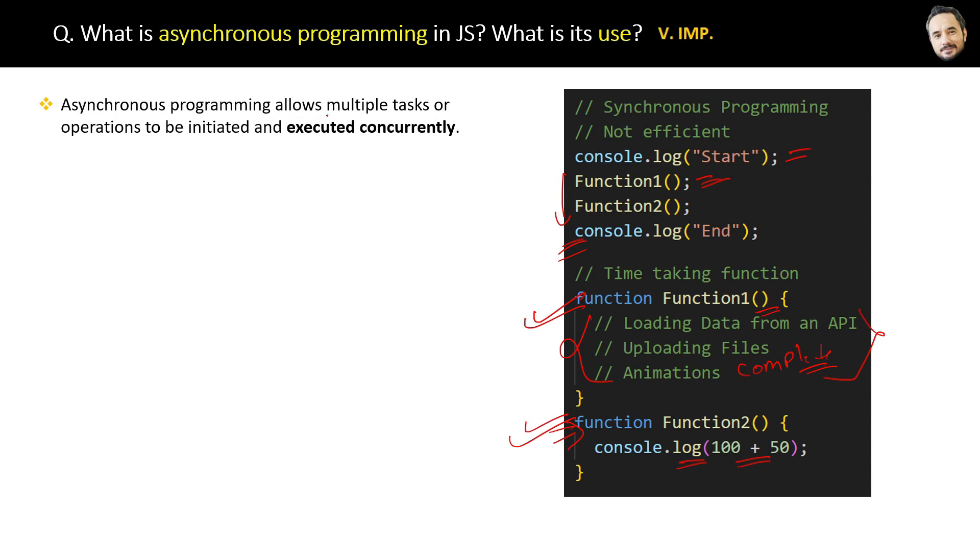Asynchronous programming allows multiple tasks or operations to be executed concurrently. Another very important point is asynchronous operations do not block the execution of the code. Now the question is when to use asynchronous programming, in what scenarios in real applications?